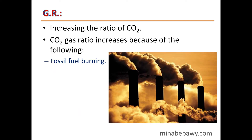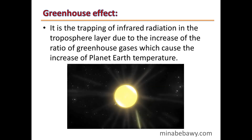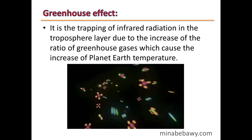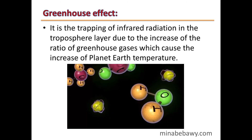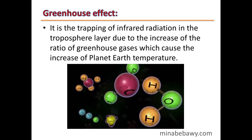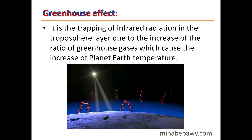Give reason: the ratio of carbon dioxide gas increases because of fossil fuel burning, cutting trees, and forest fires. What is meant by the greenhouse effect? It is the trapping of infrared radiation in the troposphere layer due to the increase in the ratio of greenhouse gases, which causes the increase of planet Earth's temperature.